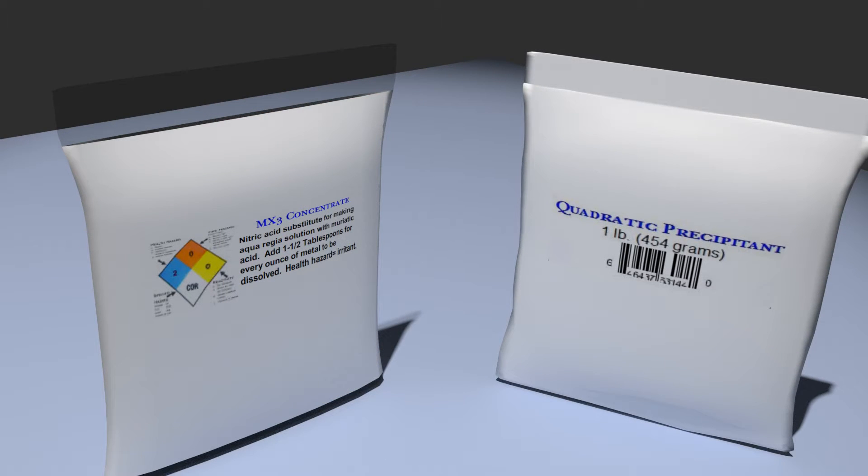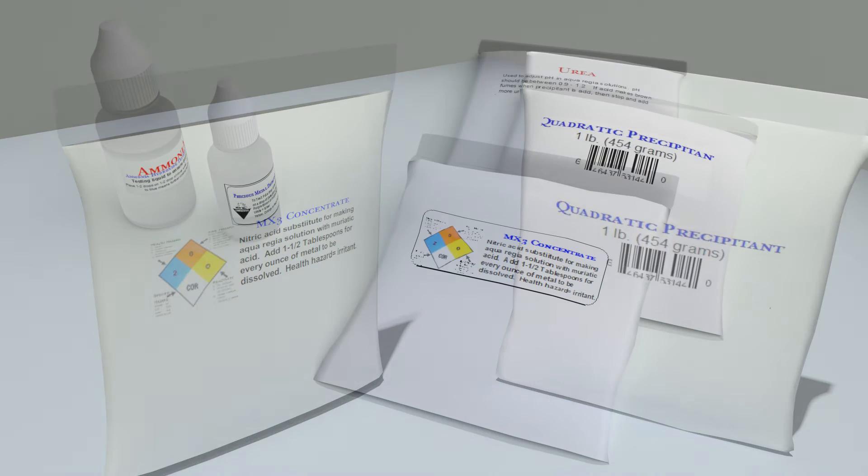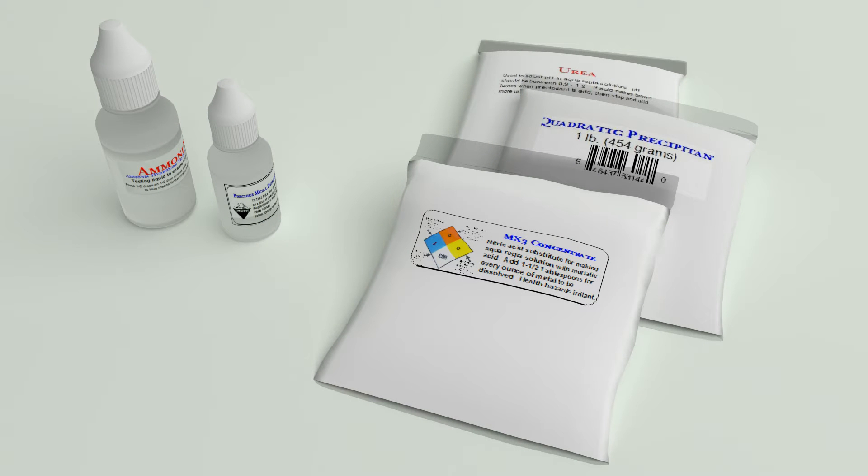These safe substitutes, MX3 and quadratic precipitant, are utilized in this kit. Just follow these simple video instructions and you will refine your gold to 99.95% with no losses, even the first time you use this process.